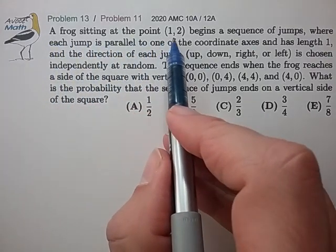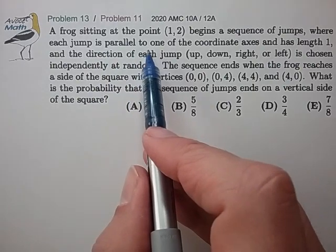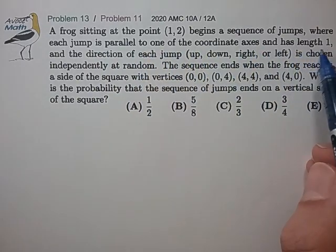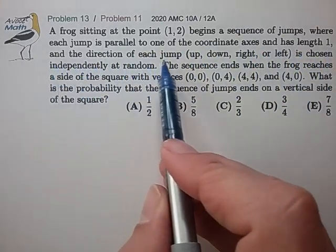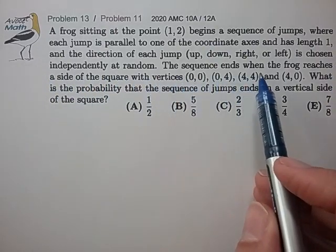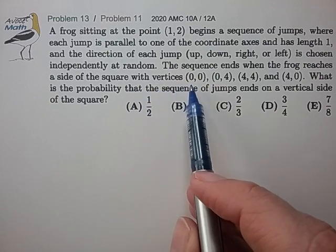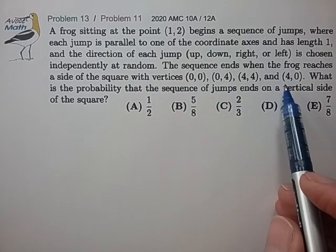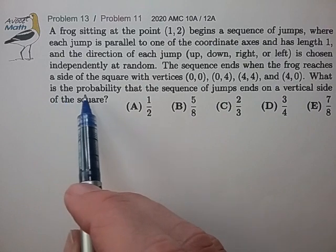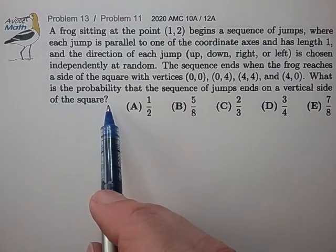A frog sitting at the point (1,2) begins a sequence of jumps where each jump is parallel to one of the coordinate axes and has length 1, and the direction of each jump is chosen independently at random. The sequence ends when the frog reaches a side of the square with vertices (0,0), (0,4), (4,4), and (4,0). What is the probability that the sequence of jumps ends on a vertical side of the square?